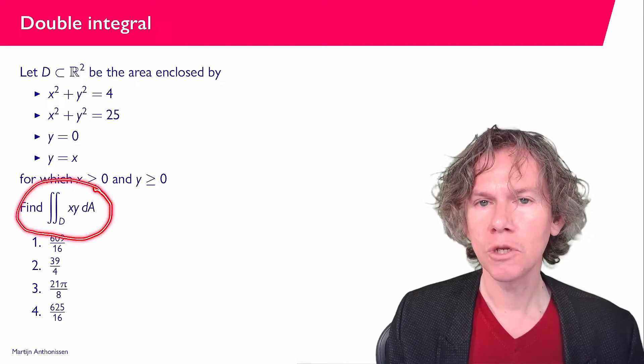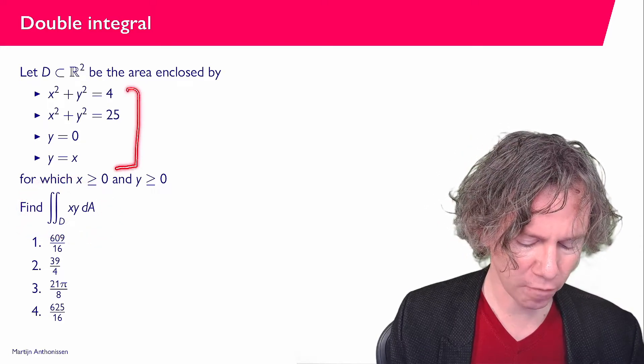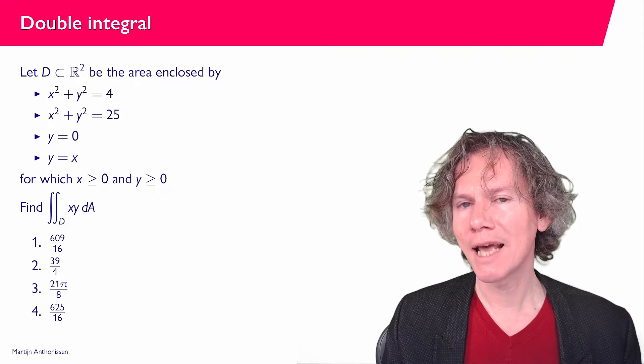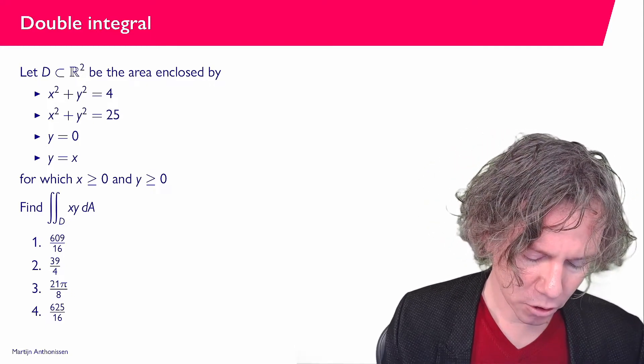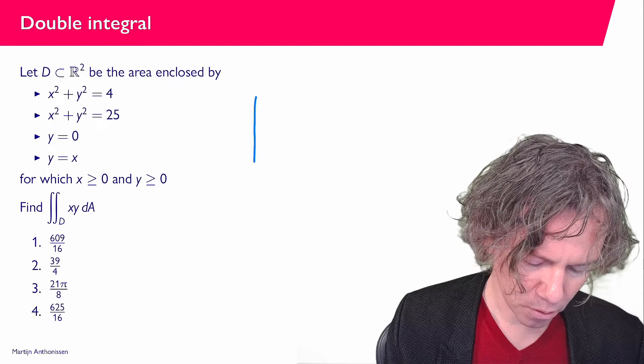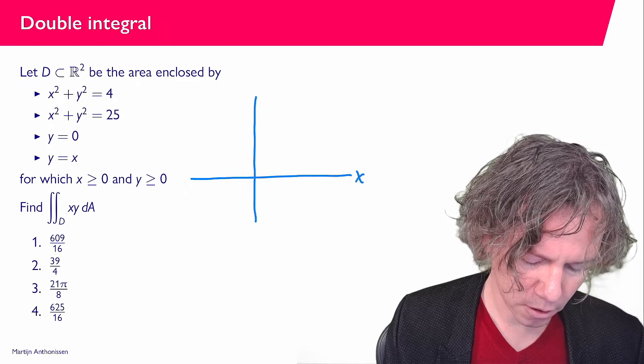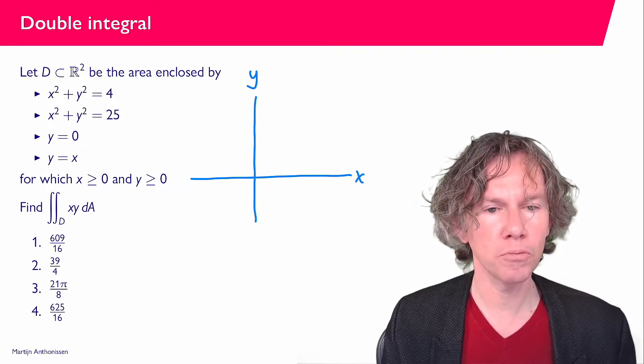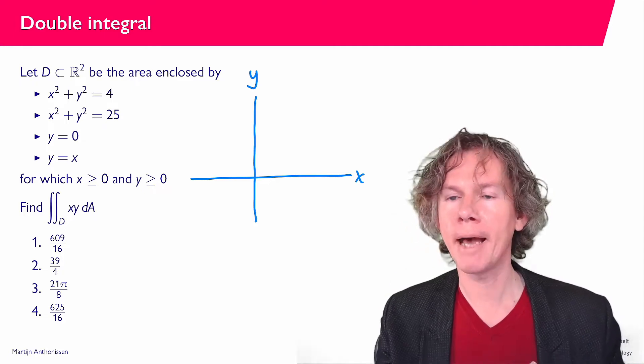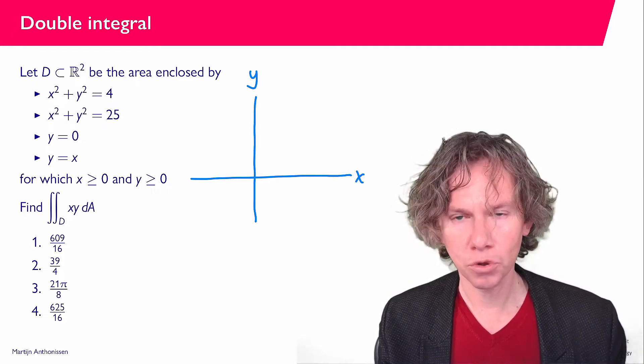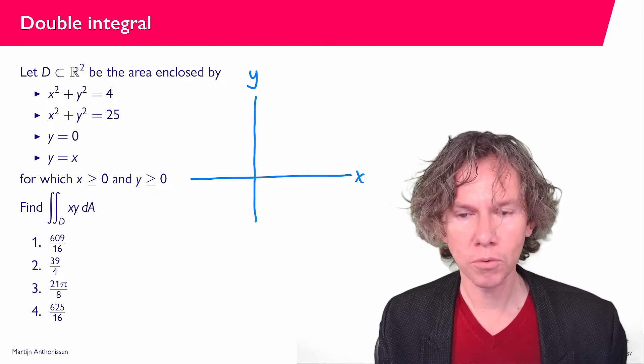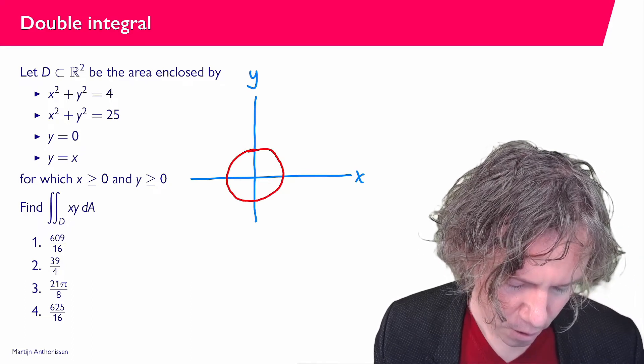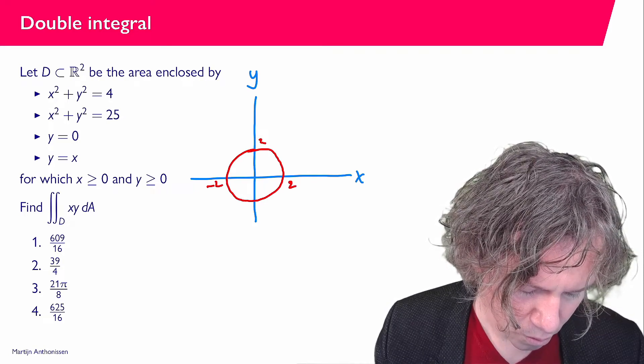And this region D that we need to integrate over is given by the conditions that we have here. So let's first try and get an idea of what this region looks like. So it is in 2D. Let me draw a horizontal and a vertical axis. The first condition we have is that X squared plus Y squared equals 4 is one of the boundaries of our region. And this is of course a circle with center in the origin and radius 2. So I can draw a little circle here that intersects at 2, minus 2, 2, minus 2.